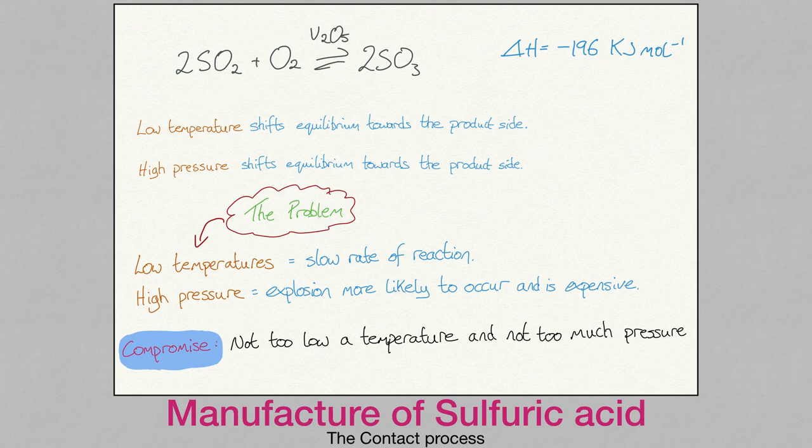But there is a problem with applying these two stresses. Low temperatures favour the product side, but we know from studying rates of reaction that low temperatures mean the rate is slow. In addition, reactions under high pressure can be dangerous and unstable — they are also difficult to maintain and expensive. Chemists must compromise and must not have too low a temperature and not too high a pressure.